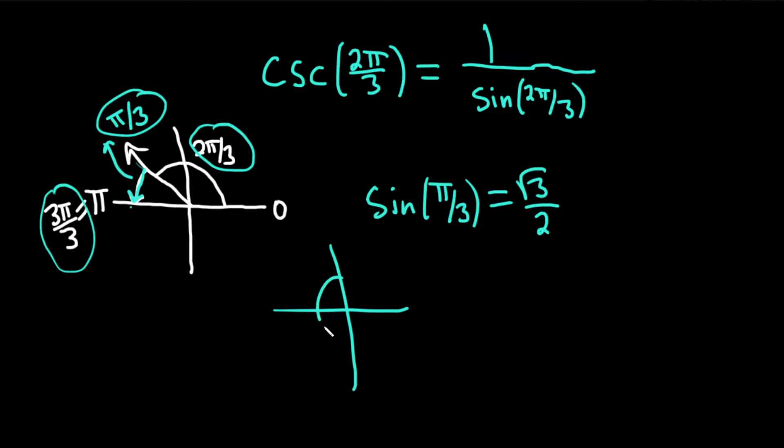Well, the unit circle looks like this, and every ordered pair on this circle has the form cosine θ comma sine θ. In our case, 2π over 3 is over here, right here. And it's positive because it's the y-coordinate. Sine is the y-coordinate, so that's positive. The answer is simply going to be this.